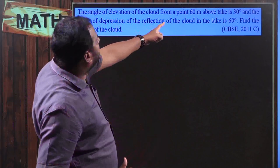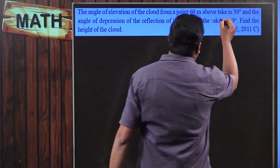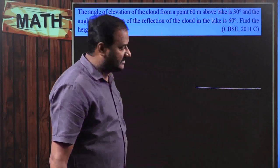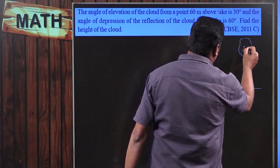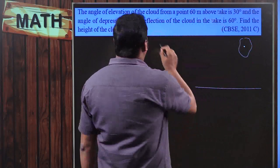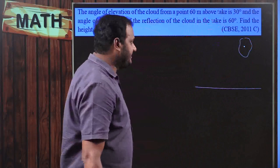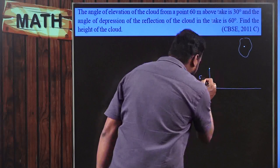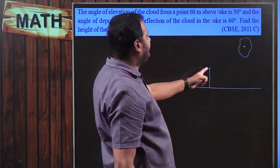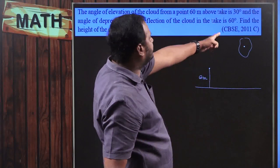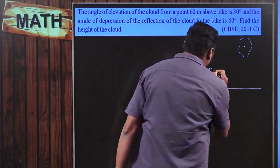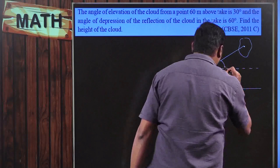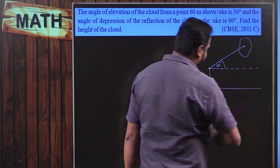The angle of elevation of the cloud from a point 60 meters above the lake — here, above the lake, this is the surface of the lake, and this is the position of the cloud. From a point 60 meters above the lake, the angle of elevation of the cloud is observed to be 30 degrees, so you need to draw a horizontal line.